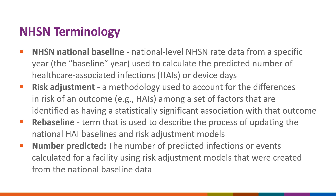The term Re-Baseline describes the process of updating the national HAI baselines and risk adjustment models used to calculate the SIRs and SURs using a new national baseline year. Number predicted is the number of predicted infections or events calculated based on the national HAI aggregate data, adjusted for each facility using variables found to be significant predictors of HAI incidence. This is used as the denominator of the SIR.